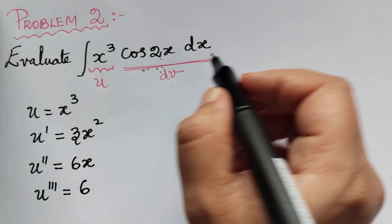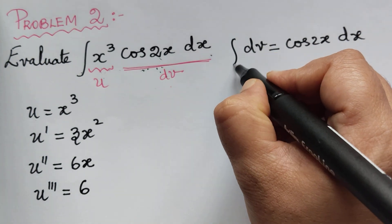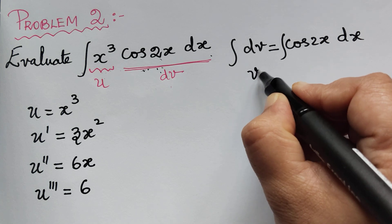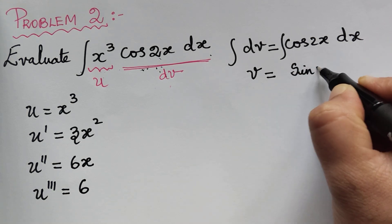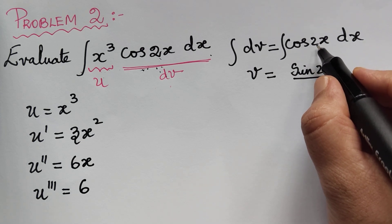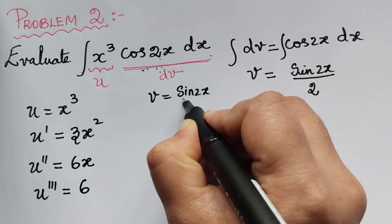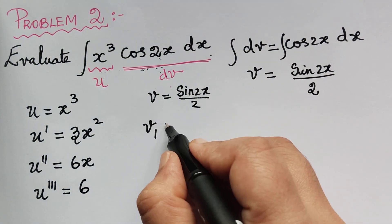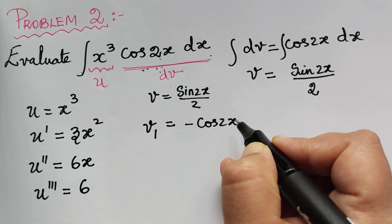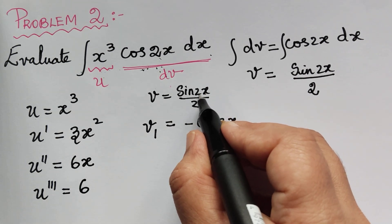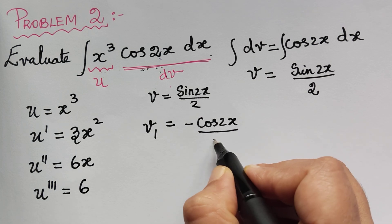Now, dv is equal to cos 2x dx. From this we obtain v by integrating both sides. The integral of cos 2x is sine 2x divided by 2, so v equals sine 2x divided by 2. After getting v, we find v1 by integrating v with respect to x. The integral of sine 2x is minus cos 2x divided by 2, and since we already have 2 in the denominator, it gets multiplied to become divided by 4. So v1 equals minus cos 2x divided by 4.